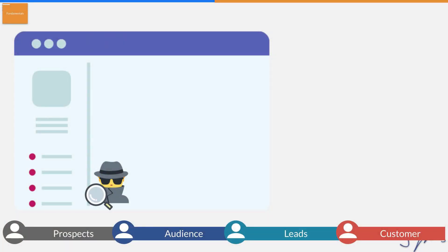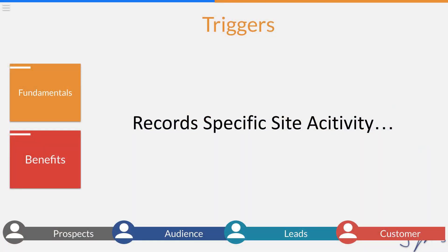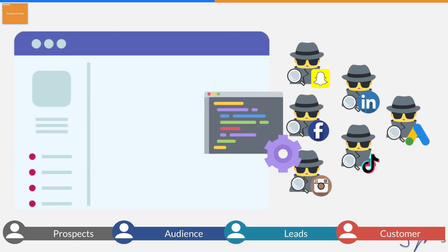But before we get to that, there's a second thing we need to understand. We have all these little robots or agents running around our site tracking everything that's going on. The second part is triggers, because after all, we don't care about everything that happens on our site. We care about key actions like someone joining our email list or purchasing a product or service — and that's where triggers come in. So while all information is collected, we have to tell these platforms what information is important to us.